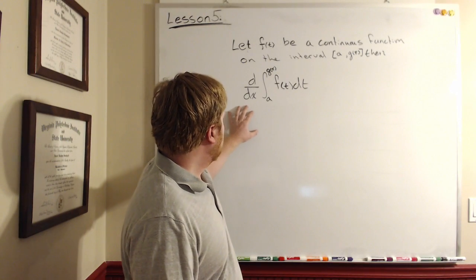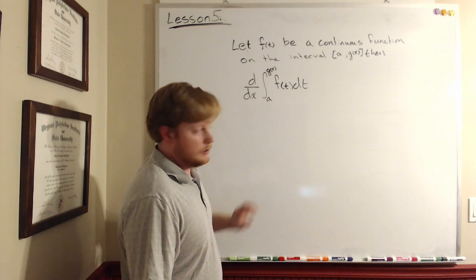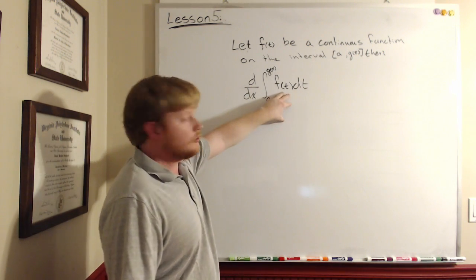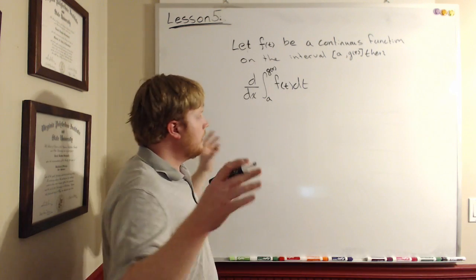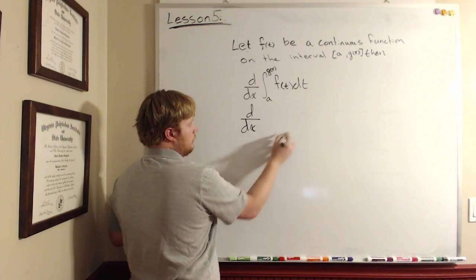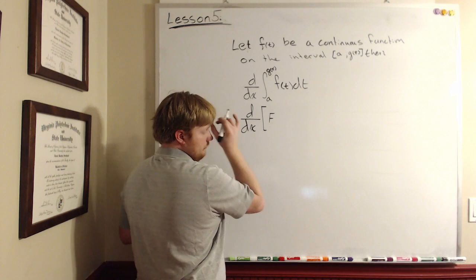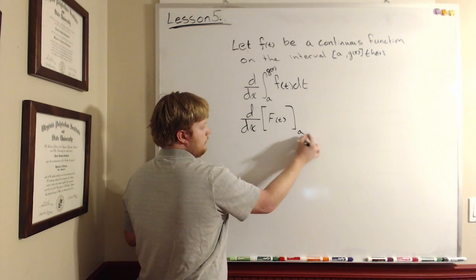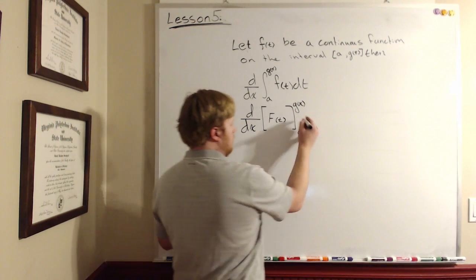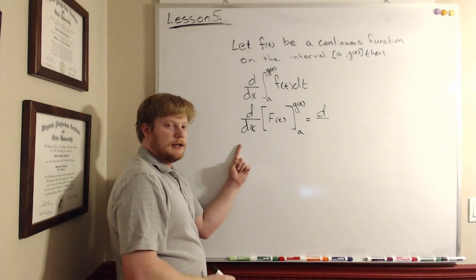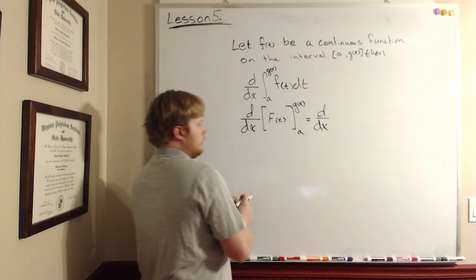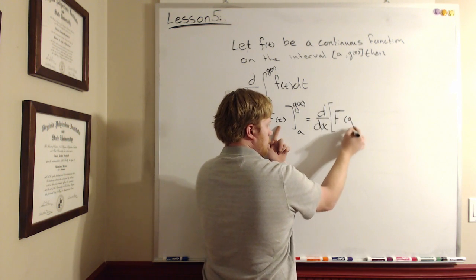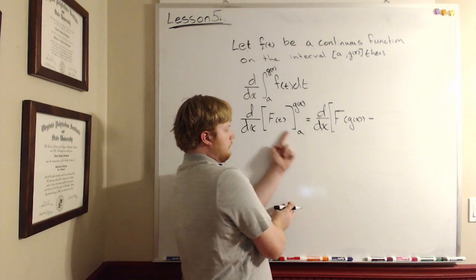The derivative of the integral — notice that a is a constant. If f is continuous on the interval from a to g of x, then the integral of f is the antiderivative of f, whatever that may be. From the first part of the Fundamental Theorem of Calculus, we get the antiderivative of f of t evaluated from a to g of x. Notice that I keep writing everything from the original problem until I've used it — the antiderivative of f of t evaluated at g of x minus f of t evaluated at a.